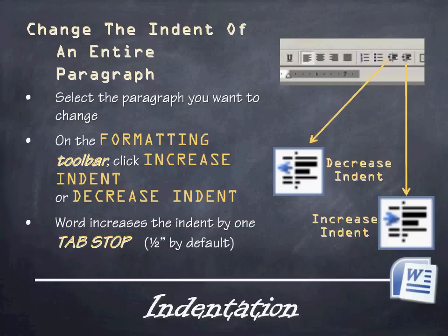If you want to change the indentation of an entire paragraph, it's really simple. Select the entire paragraph by clicking and dragging to highlight it. On the formatting toolbar, click Increase Indent or Decrease Indent depending on how you want to indent your paragraph. The Word document will then increase the indent by one tab stop — half an inch by default — either away from or toward the margin, doing the entire paragraph very quickly and easily.